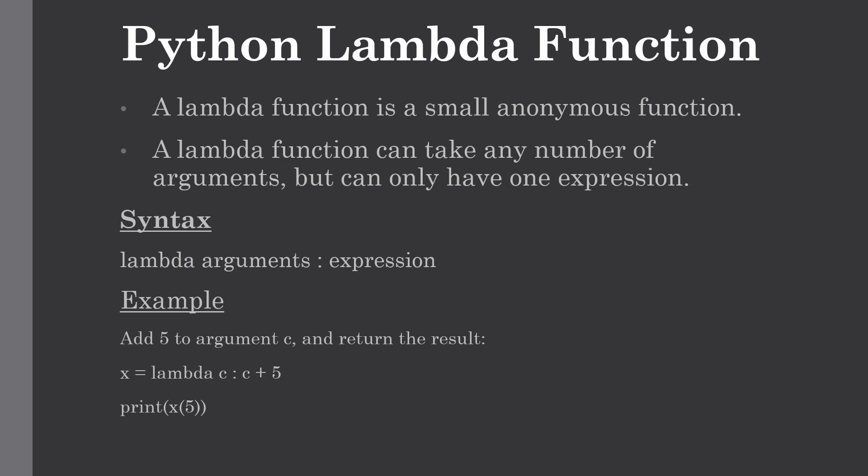In Python, an anonymous function means the function is without a name. As we already know, the def keyword is used to define a normal function in Python. Similarly, the lambda keyword is used to define the anonymous function in Python, and it has the following syntax.